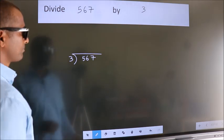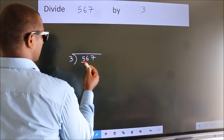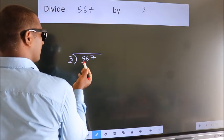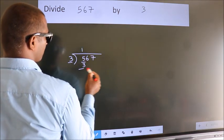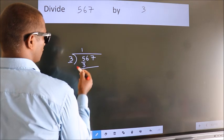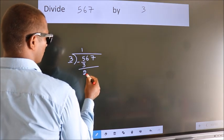Next. Here we have 5, here 3. A number close to 5 in the 3 table is 3 1s 3. Now we should subtract. We get 2.